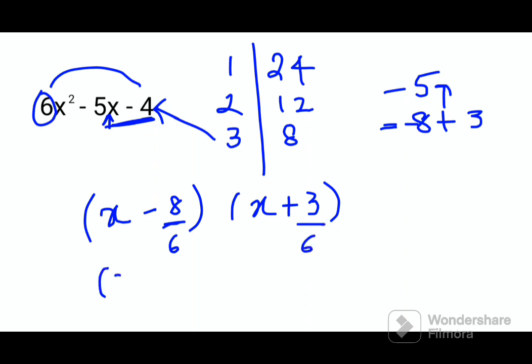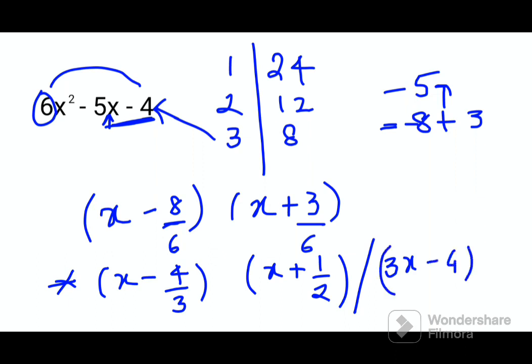So here your factors will be x - 8 and x + 3. Just don't forget of dividing this coefficient which is 6. So your final answer will be x - 4/3 and this will be x + 1/2. You can leave your answer here or you can also get your answer as 3x - 4 and 2x + 1. Either way is absolutely correct.